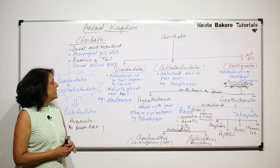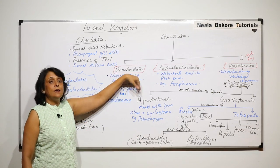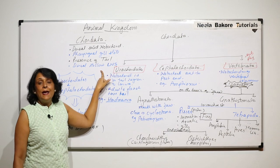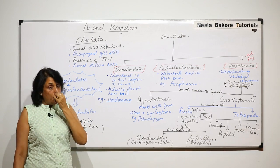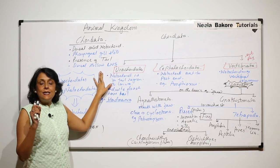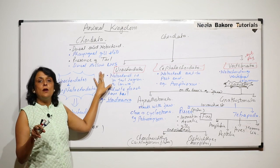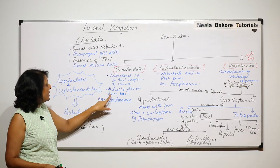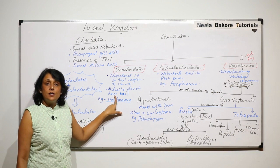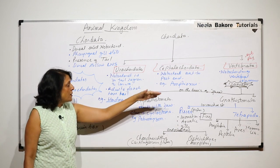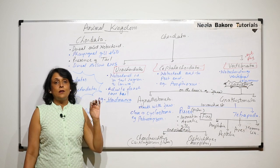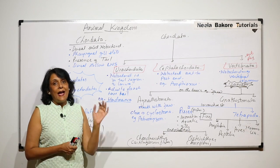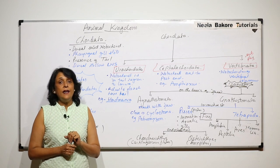Important thing is this classification. All these are included under chordates, and chordate characters are these four. A chordate must show these characters in some stage of their life. It could be embryonic stage or embryonic and adult stage. We have seen an example where it was in the larval stage but adults have lost it. The larval stages show these chordate characters, but as metamorphosis takes place, these characters get lost.